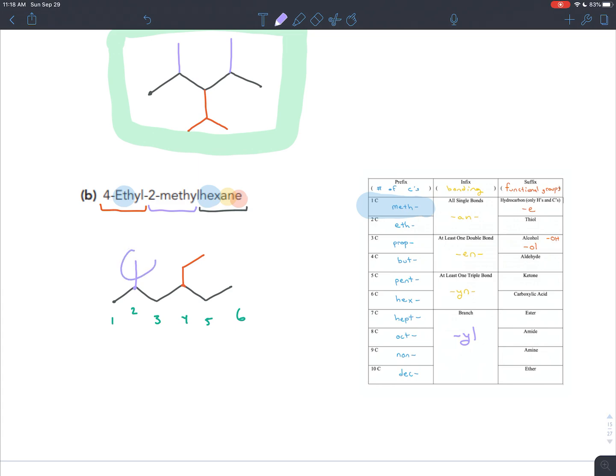Next, we have a methyl group. And the fact that it's a methyl group means there's just going to be one carbon in this branch. And that's coming off of carbon number two. So carbon number two right here, we've got a methyl group coming off. So just this one carbon off of the backbone. And that's it. That's four ethyl, two methyl hexane. Get rid of the numbers. And there we have our molecule.